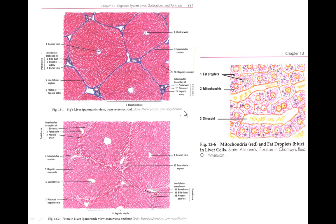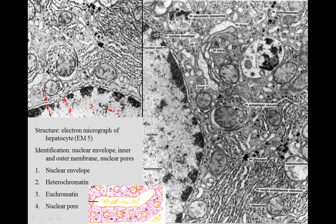We'll also look at the liver. Remember the liver has a lobule and they have cords of cells that go from here toward the central vein. We see one of those cords of cells and there's a nucleus of the cell. This is the nucleus in electron microscopic view showing the heterochromatin around the edge and the euchromatin all inside. Lots of euchromatin in the hepatic cell nucleus.